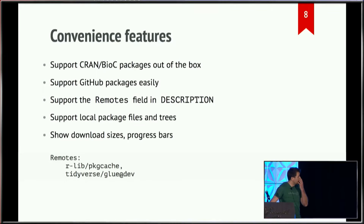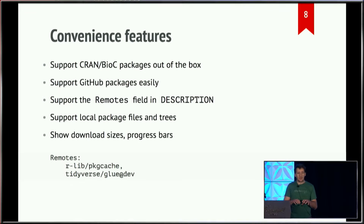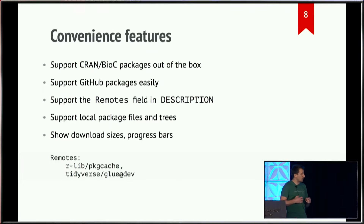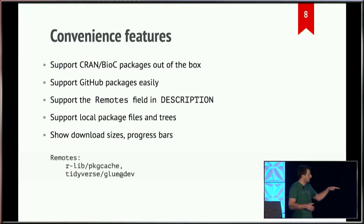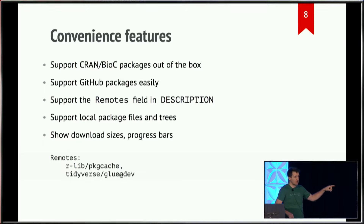PKG has some convenience features. It supports CRAN and Bioconductor packages out of the box, and GitHub packages really easily. There is the 'remotes' field in the description file — if you haven't seen this before, it allows you to depend on non-standard packages in your own package and make installation work seamlessly. You can put an entry like 'username/repository' for a GitHub package, and add '@dev' to specify a branch. We support all of this.